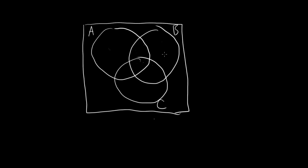Here we use the checking method to figure out what the set (C' intersect B) union A is. So we have to start out in the parentheses, which is C' intersect B. So here we have C' — this area, this area, this area, and this area. So this is everything outside of C.